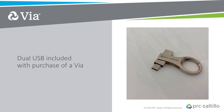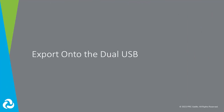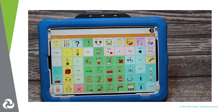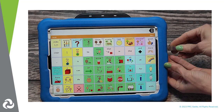You can use the dual USB that comes with your Via with TouchChat to back up and transfer your customized vocabulary file. Start by swiveling it so that the smaller side is visible. Let's start with exporting onto the dual USB. Locate the charge port on the side of your Via device and insert the dual USB into the port.